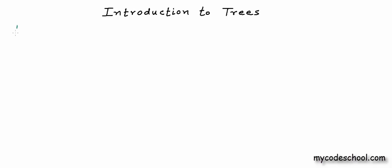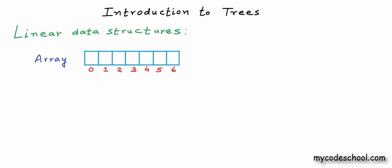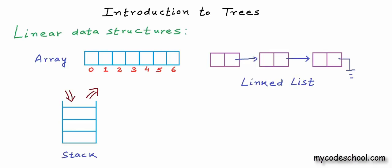So far in this series we have talked about what we can call linear data structures: array, linked list, stack and queue. All of these are linear data structures — basically collections in which data is arranged in a sequential manner. In all these structures we have a logical start and a logical end, and an element can have a next element and a previous element. So all in all we have linear or sequential arrangement.